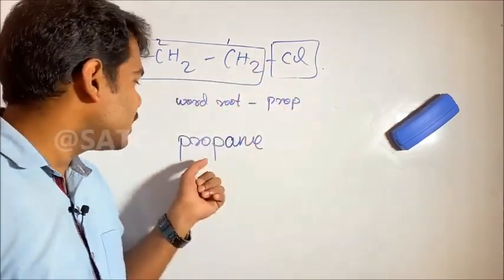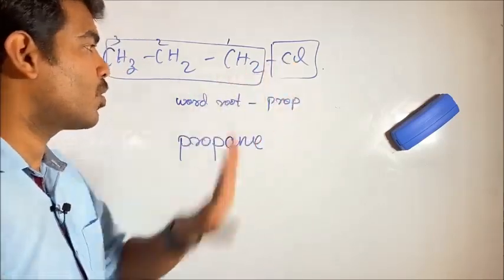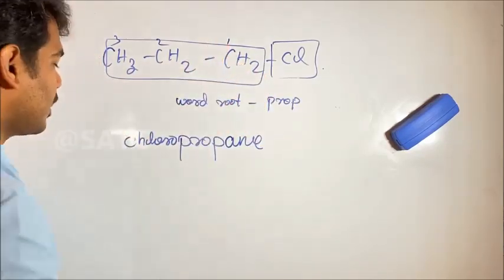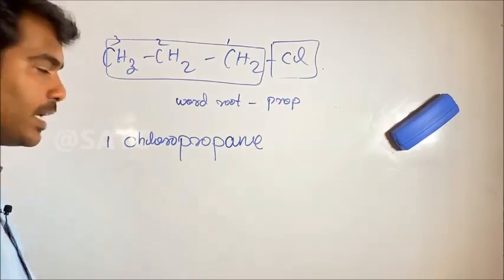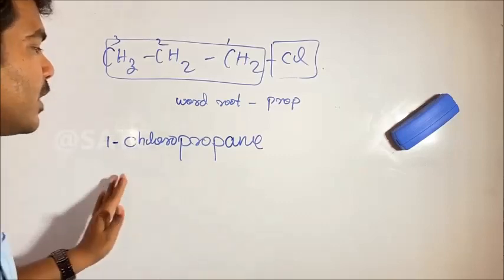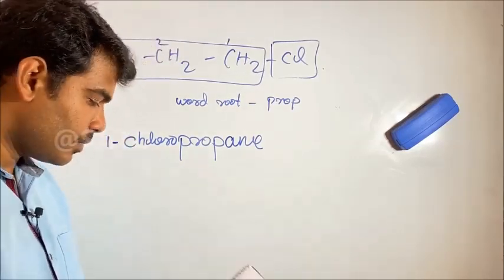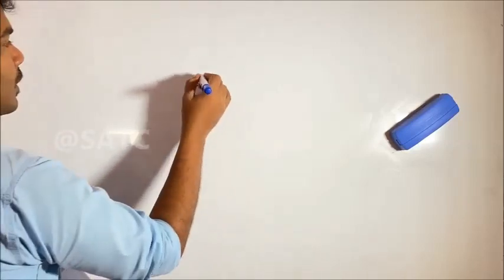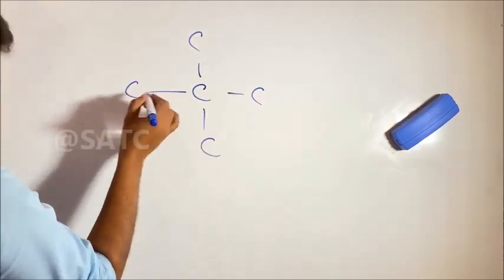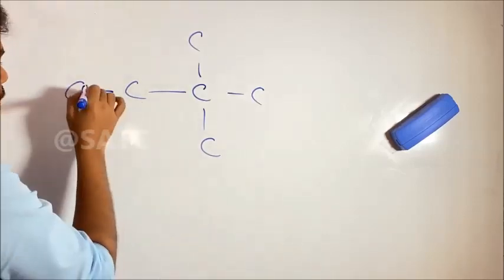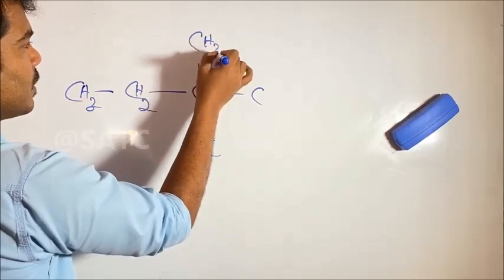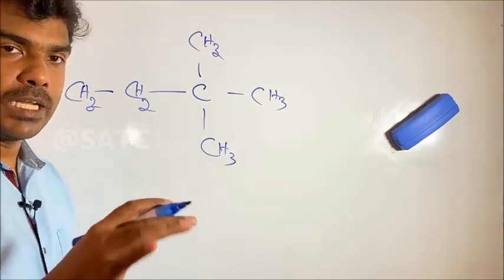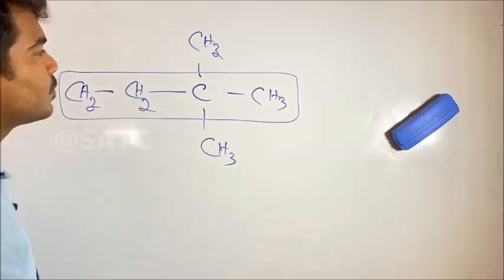Chlorine is used as a prefix in IUPAC naming. Now let's look at an example. We have a carbon chain: CH3, CH2, CH3, CH3. The longest chain has 4 carbons, so we select that as the main chain.